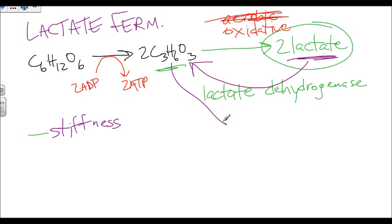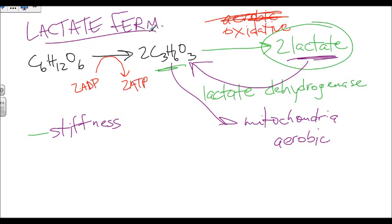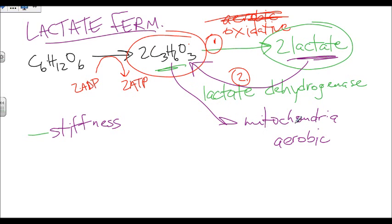That pyruvate can now go into the mitochondria to undergo aerobic cellular respiration. So lactate fermentation is when the body cannot take in oxygen quickly enough, and this happens when you're working out. When the body is trying to undergo glycolysis as normal and wants to go into the Krebs cycle, because not enough oxygen is available, it will not go into the mitochondria yet. Instead it takes this first step to form the two lactate. Once the exercise is over and you slow down, the lactate comes back, reforms into pyruvate, and enters the mitochondria to undergo aerobic cellular respiration, giving you the most ATP energy.